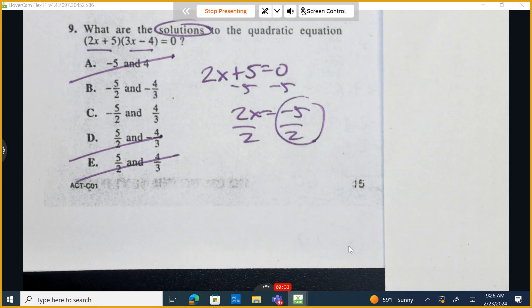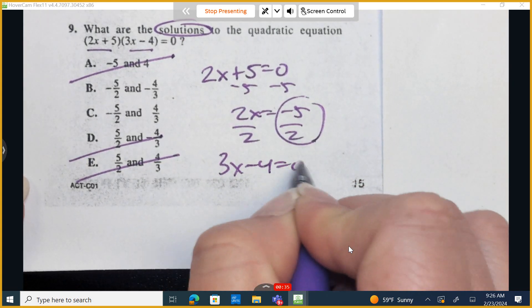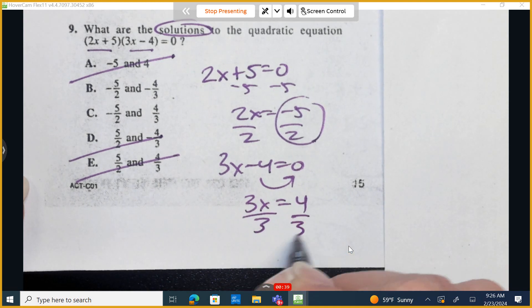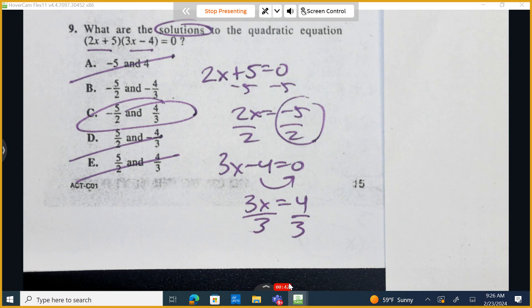We have a 50% chance of getting it correct. I'm doing the next one. 3x minus 4 equals 0. I'm adding 4 to the opposite side, I'm divided by 3, and I have a positive 4 thirds. The correct answer is C.